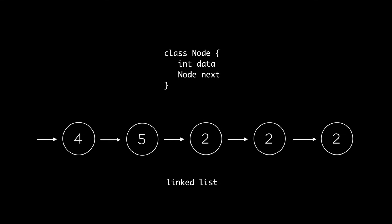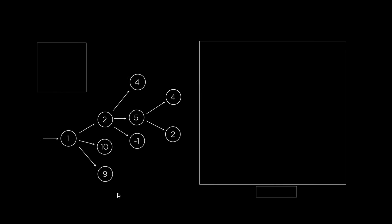A tree is a similar data structure to a linked list, and the only difference is that in a linked list each node can only link to one other node, but in a tree each node can link to multiple other nodes. Here's one example of a tree — as you can see each node here is linking to multiple nodes, at least three other nodes.